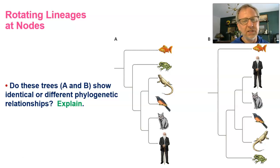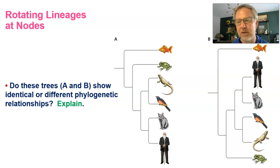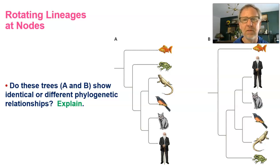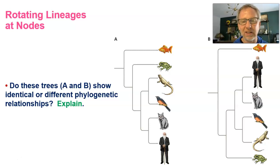Figure B — does it show identical or different phylogenetic relationships? If you look closely, Charles Darwin is still depicted as the closest relative to the cat. The lizard is still depicted as most closely related to the bird. Those two lineages connect at a node, same as figure A. When you scrutinize the two figures, you can see they are the same hypothesis, showing the same relationships among species — the lineages have just been rotated around the nodes to point in different directions. What's important is how the lines are connected at the nodes.